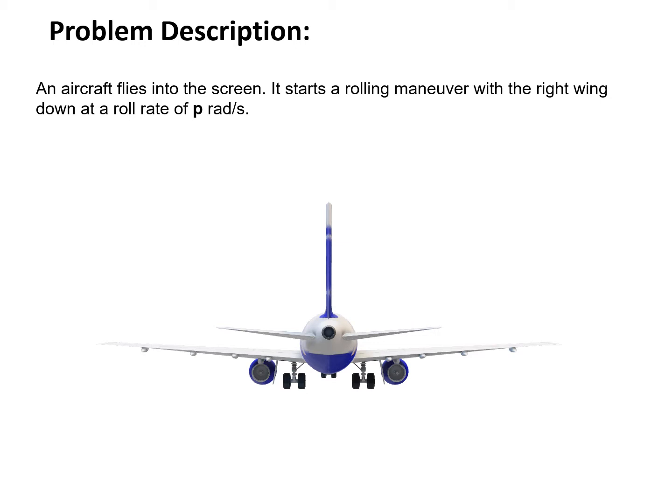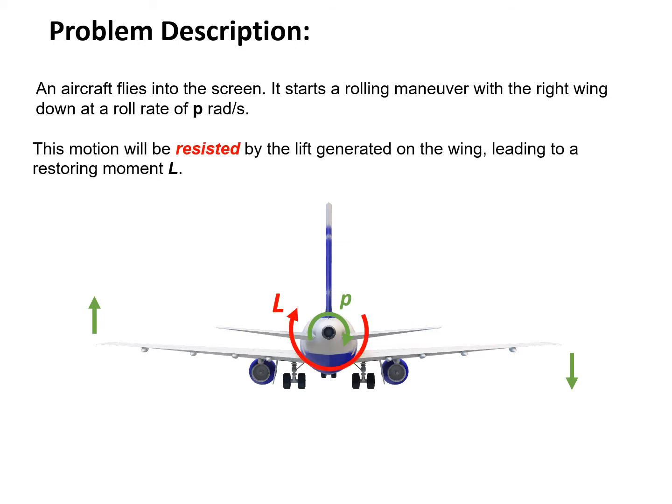We can describe the problem this way. We have an aircraft flying into the screen. It starts a rolling maneuver with the right wing down and simultaneously the left wing should go up, and this rolling motion has an angular rate of P radians per second. This motion will be resisted by the lift generated on the wing, leading to a restoring moment L.